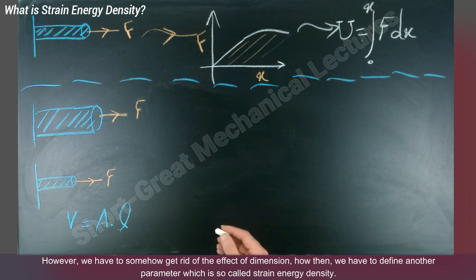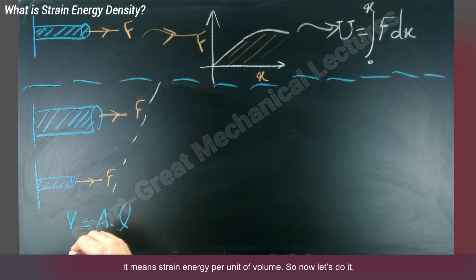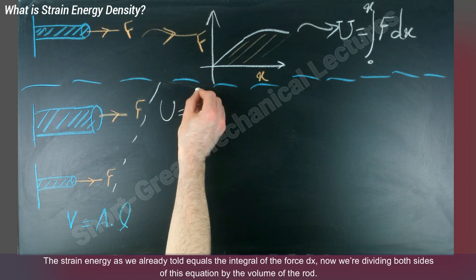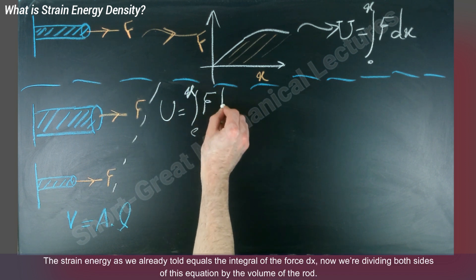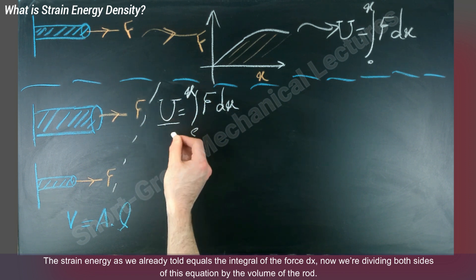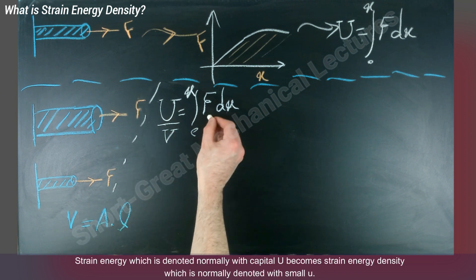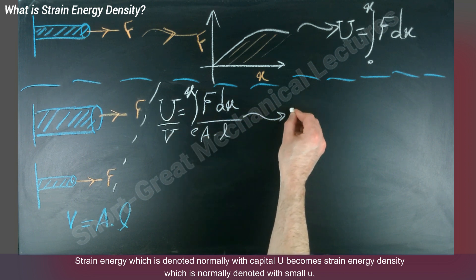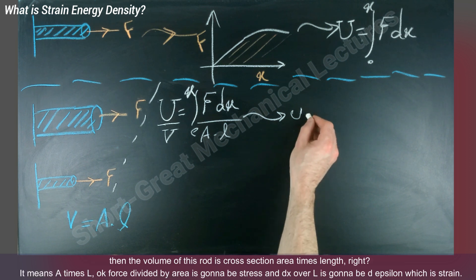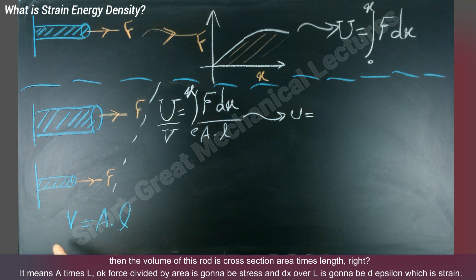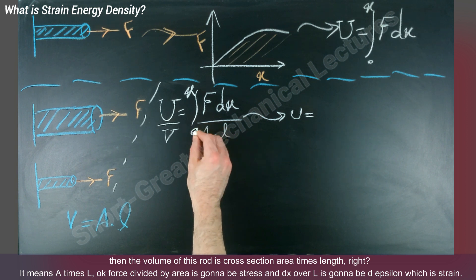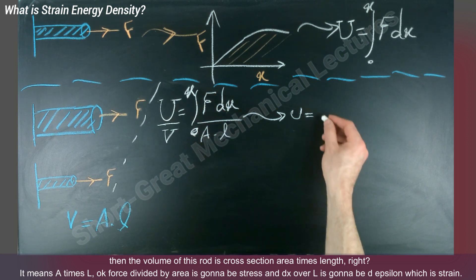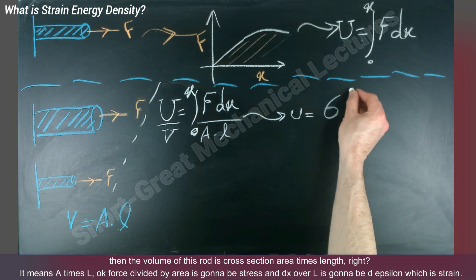However, we have to somehow get rid of the effect of dimension. How? We have to define another parameter which is called strain energy density. It means strain energy per unit of volume. So now let's do it. The strain energy equals the integral of the force dx. Now we're dividing both sides of this equation by the volume of the rod. Strain energy, which is denoted normally with capital U, becomes strain energy density, which is normally denoted with small u. The volume of this rod is cross-section area times length, right? It means A times L. Force divided by area is going to be stress, and dx over L is going to be epsilon, which is strain.